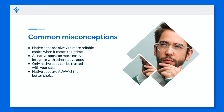Some common misconceptions that we hear all the time: first, native apps are always going to be a more reliable choice when it comes to uptime. Second, all native apps can more easily integrate with other native apps. Third, only native apps can be trusted with your data. And lastly, native apps are always the better choice.